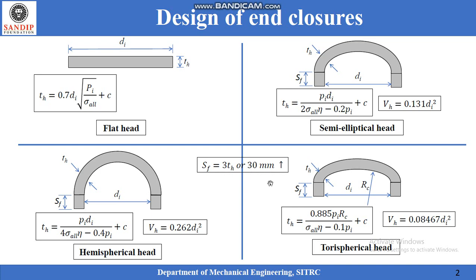A close observation of the diagram of all three formed heads will reveal that the hemispherical head is the deepest head whereas the torispherical head is the shallowest head. The depth of the semi-elliptical head lies between hemispherical head and the torispherical head.